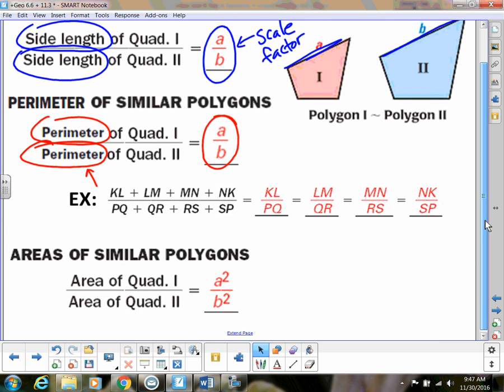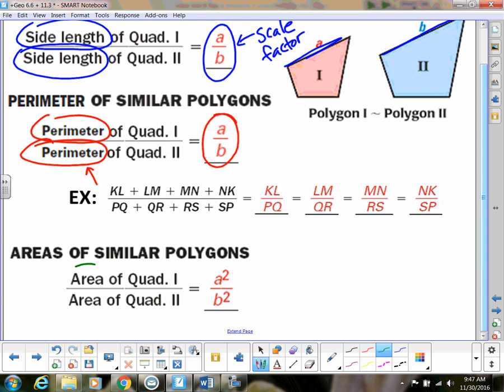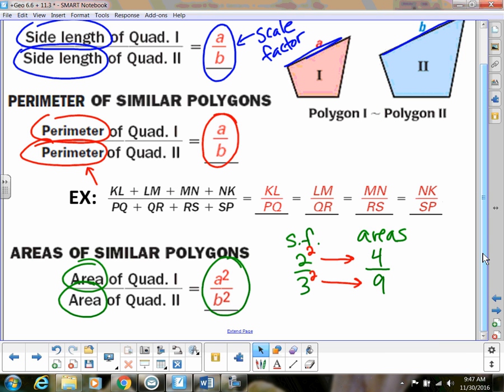And then area. Area we said was different. When we do the area of that, of the polygons, then it's going to be A squared over B squared. So in our example before, our scale factor was two-thirds, but our areas was four-ninths. So I don't know if you came up with this before I told you, but if I were to square this, so square my numerator, square my denominator, I would get four over nine. Okay? So if you know your scale factor, then in order to know the ratio of your areas, then you have to square your scale factor.